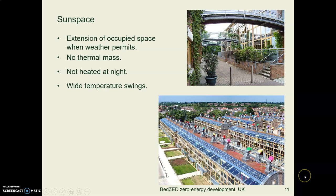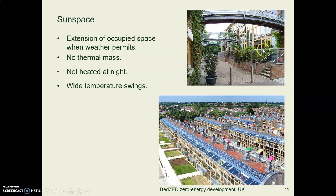Here's a large-scale example of sun spaces. This is a development called BEDZED, which stands for Beddington Zero Energy Development. This was an early mixed-use development in the UK. People have living quarters on the top floors and workspaces on the lower floors — it's a community where you can get everything you need. These south-facing spaces are sun spaces that let sunlight in. Their problem is they did not put in thermal mass, so they are dealing with some big temperature swings.